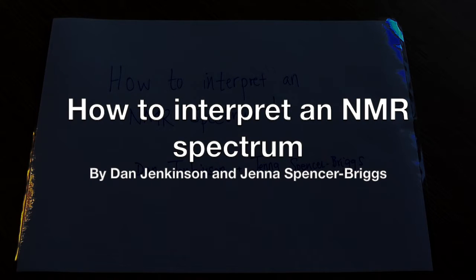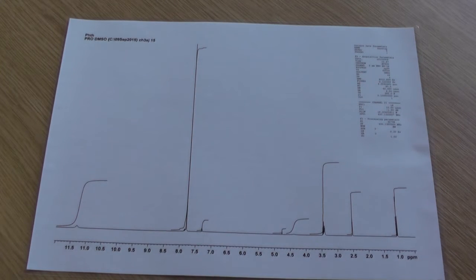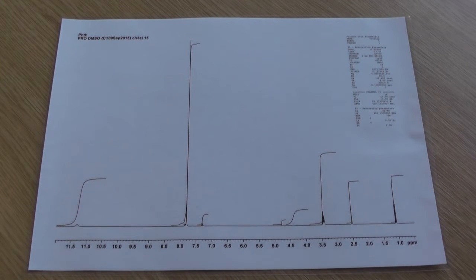Once you've done a reaction and worked it up, one of the first things you might do to analyze it is an NMR. Once you've got your spectrum, there's a few simple steps that you need to follow and handily we've written a checklist.